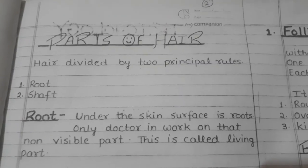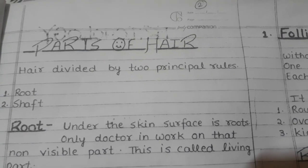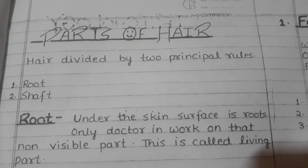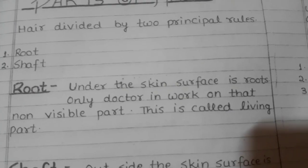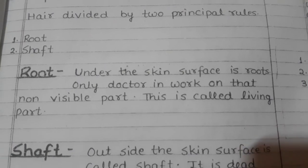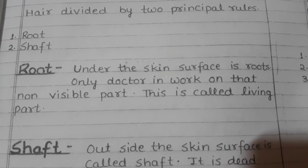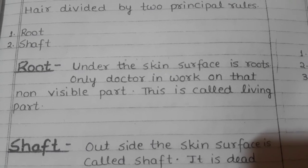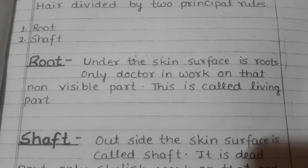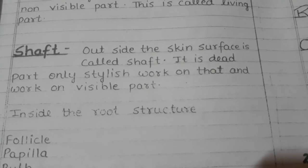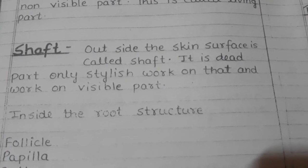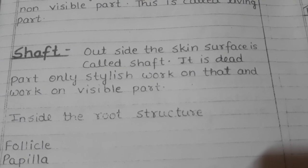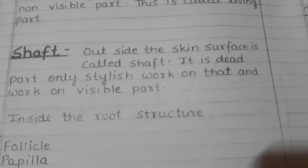Hair is divided into two principal parts. One is the root and the second is the shaft. The root is under the skin surface — it is the living part and only a doctor works on this non-visible part. The shaft is outside the skin surface — it is the dead part and stylists work on this visible part.